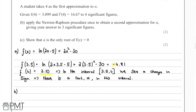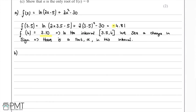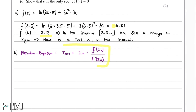We recall the Newton-Raphson formula: xₙ₊₁ = xₙ - f(xₙ) / f'(xₙ). This is the formula we're going to use.